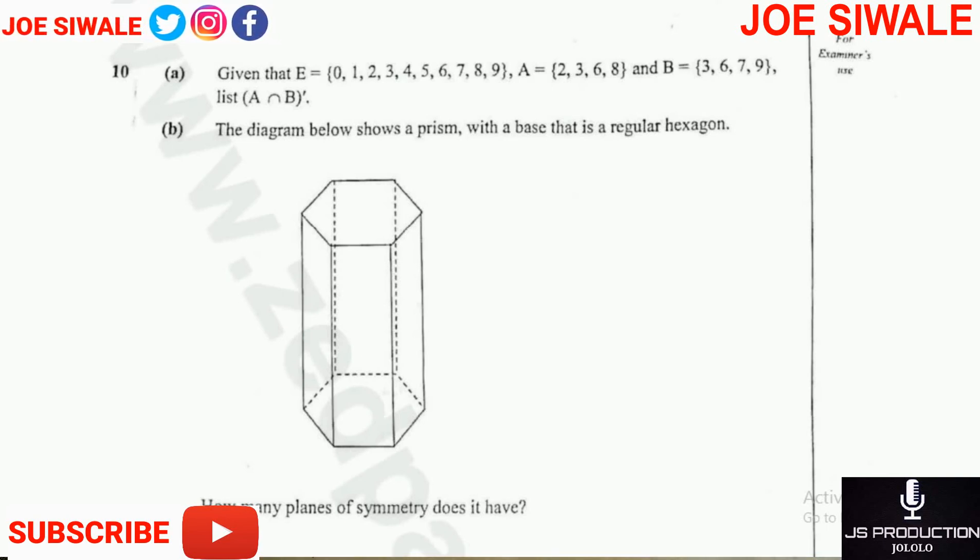and the set A is equal to {2, 3, 6, 8}, and the set B is equal to {3, 6, 7, 9}, list A intersection B complement.